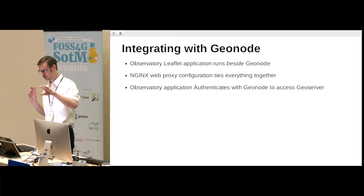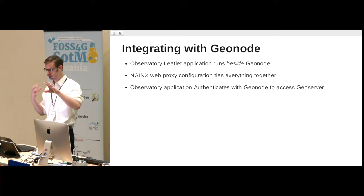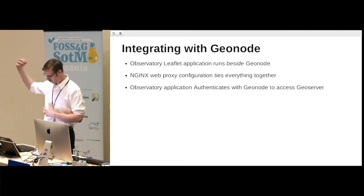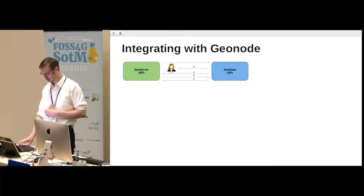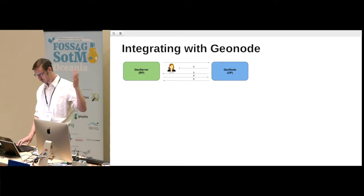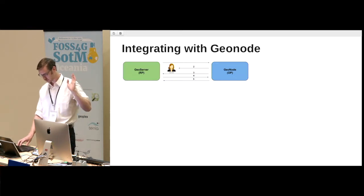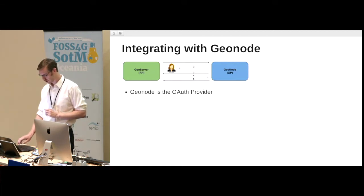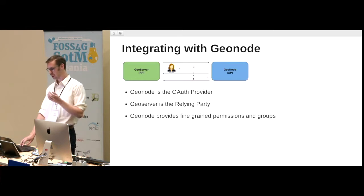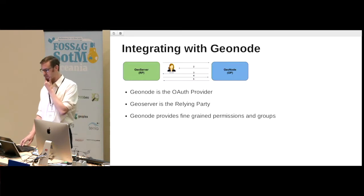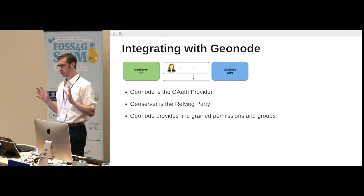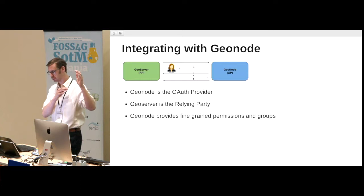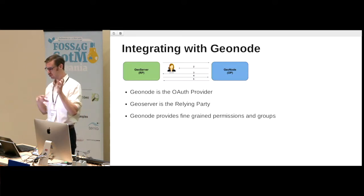The observatory application uses GeoNode's OAuth, getting an access token to request data from GeoServer. GeoServer is the relying party and GeoNode is the OAuth provider. GeoNode provides the fine-grained permissions and groups we need — we can configure which group of users has access to which set of data, read versus write, and so on.